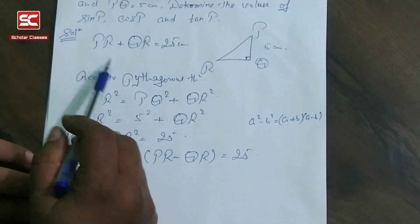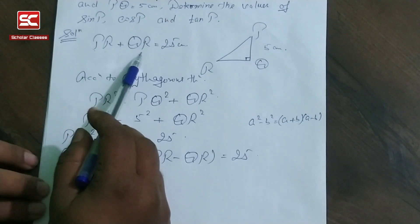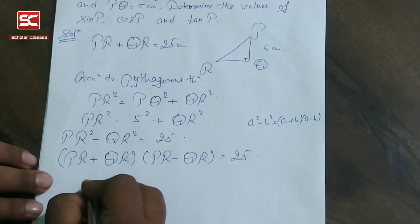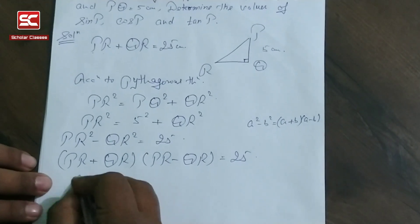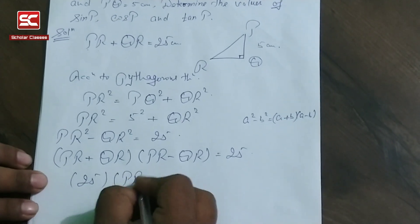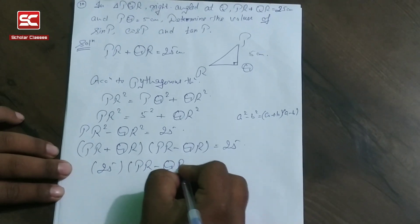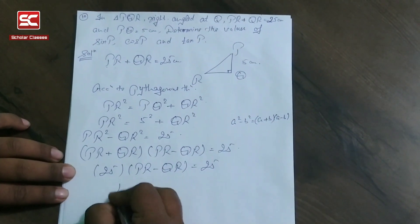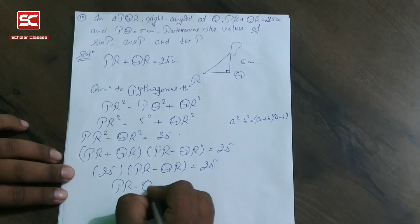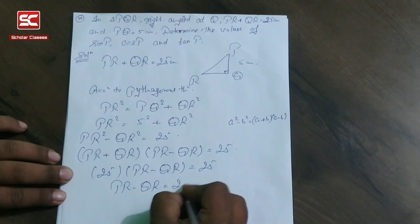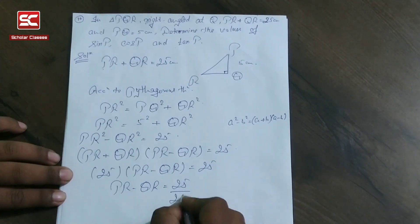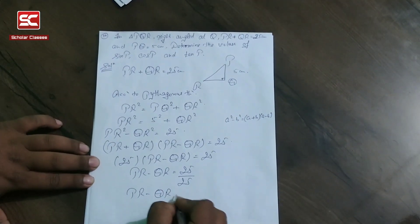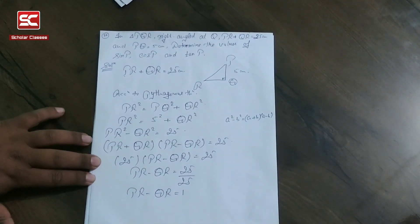We know that the value of PR plus QR is equal to 25. We put the value of PR plus QR equal to 25, giving PR minus QR equal to 25 upon 25, so PR minus QR is equal to 1.